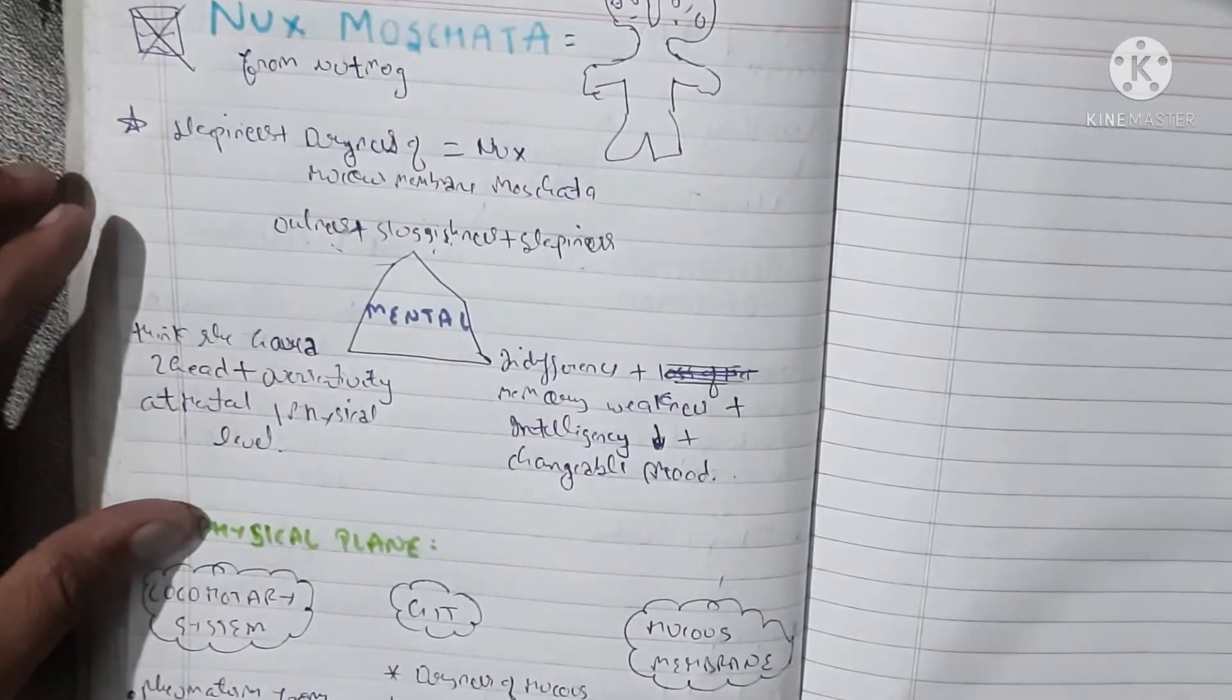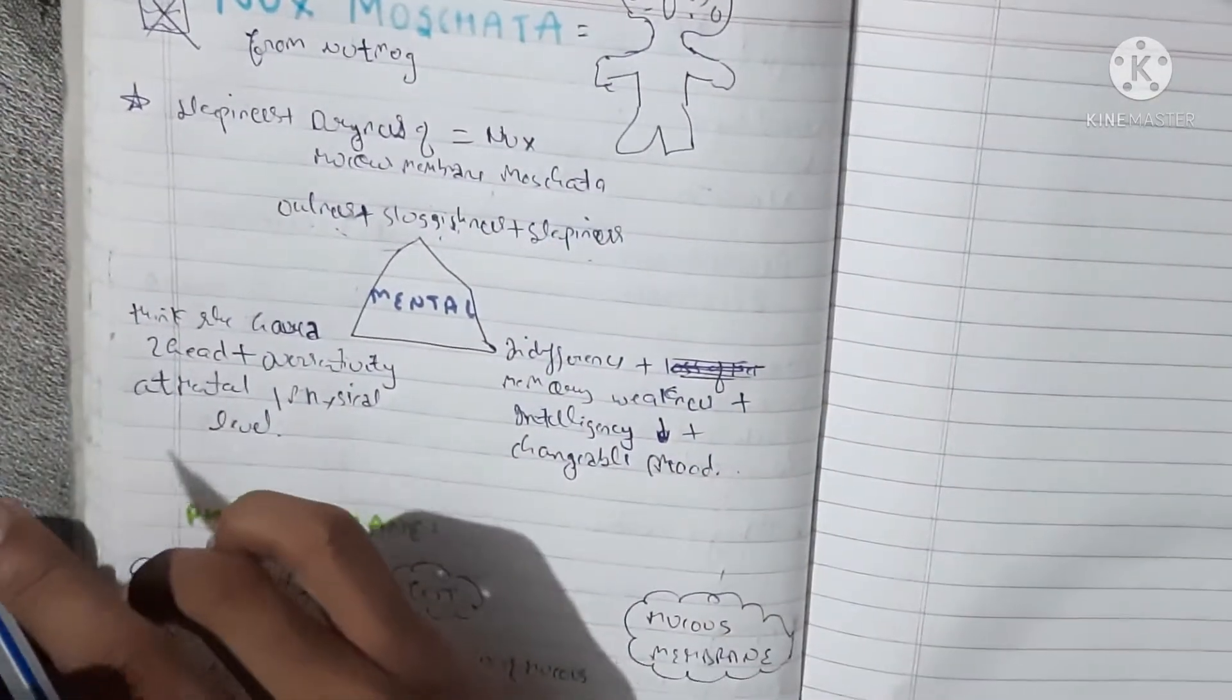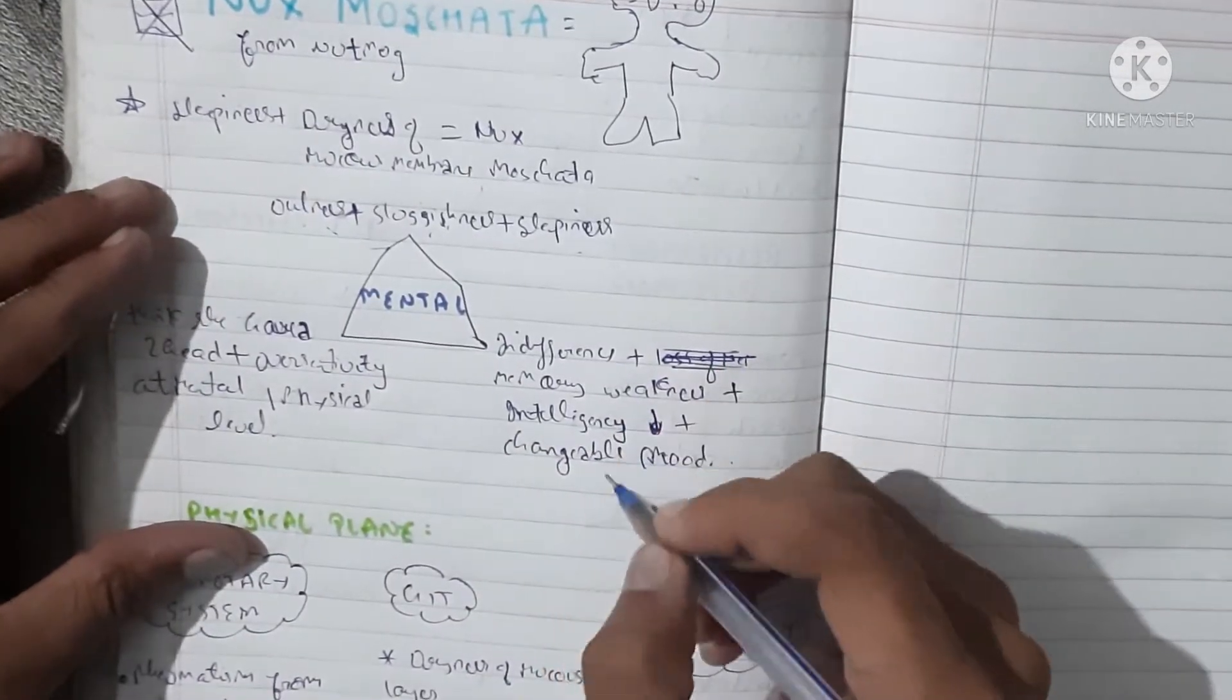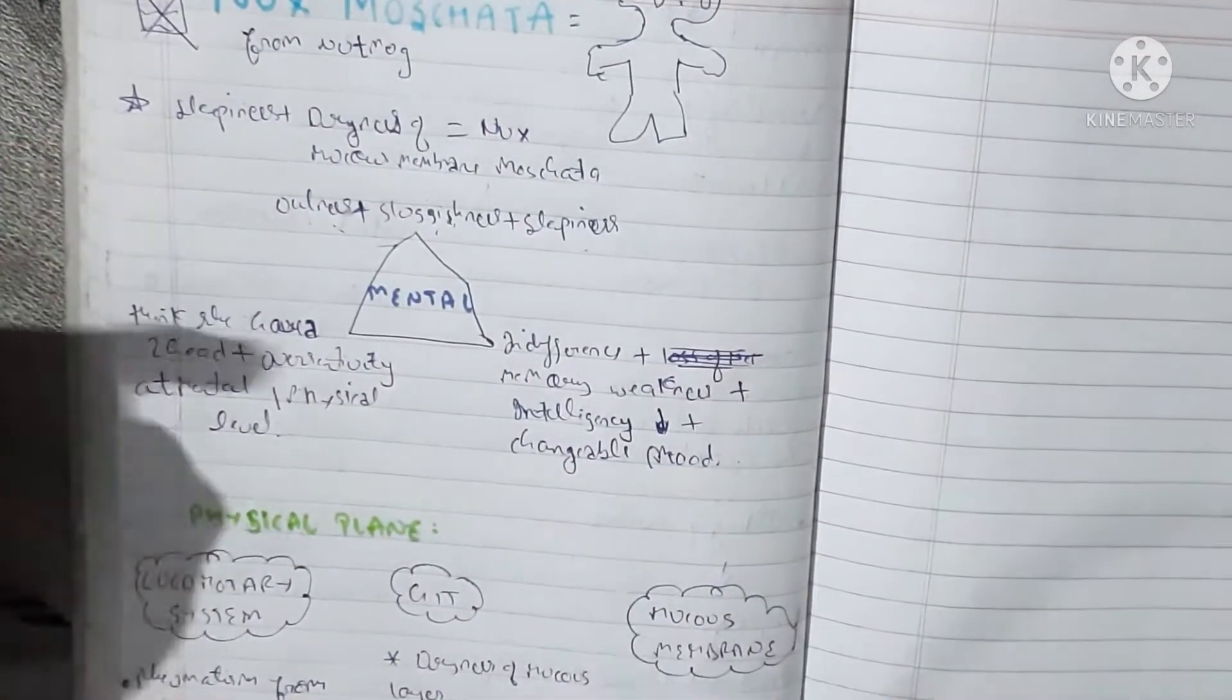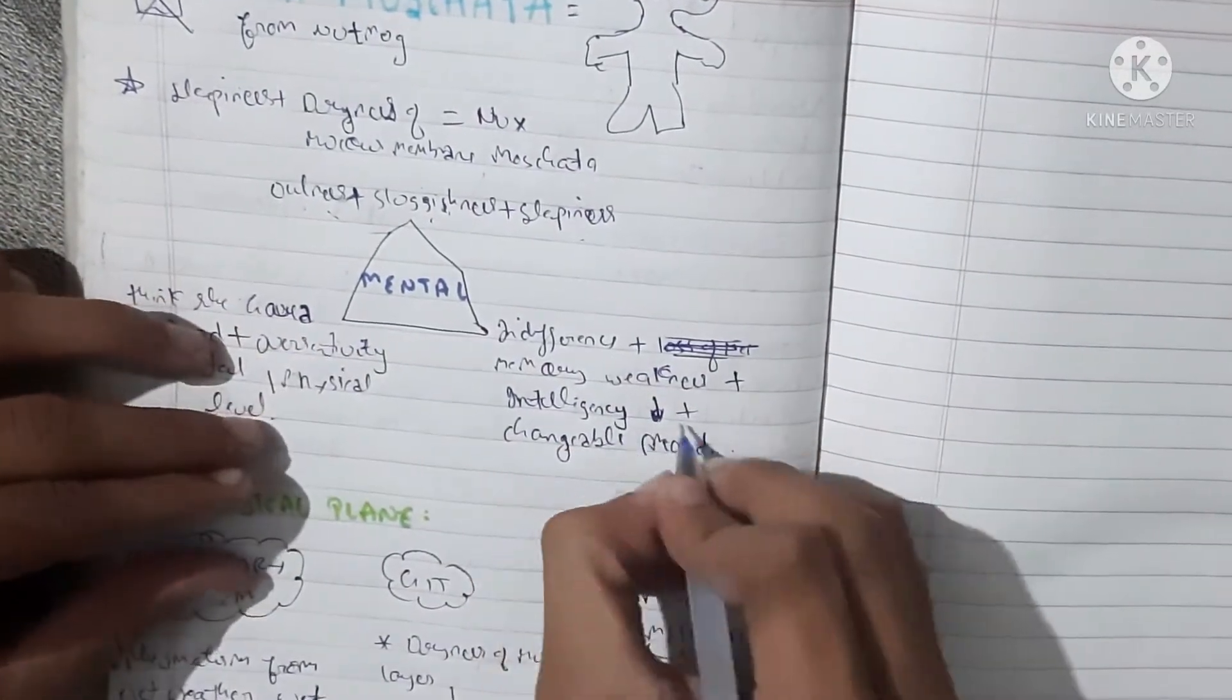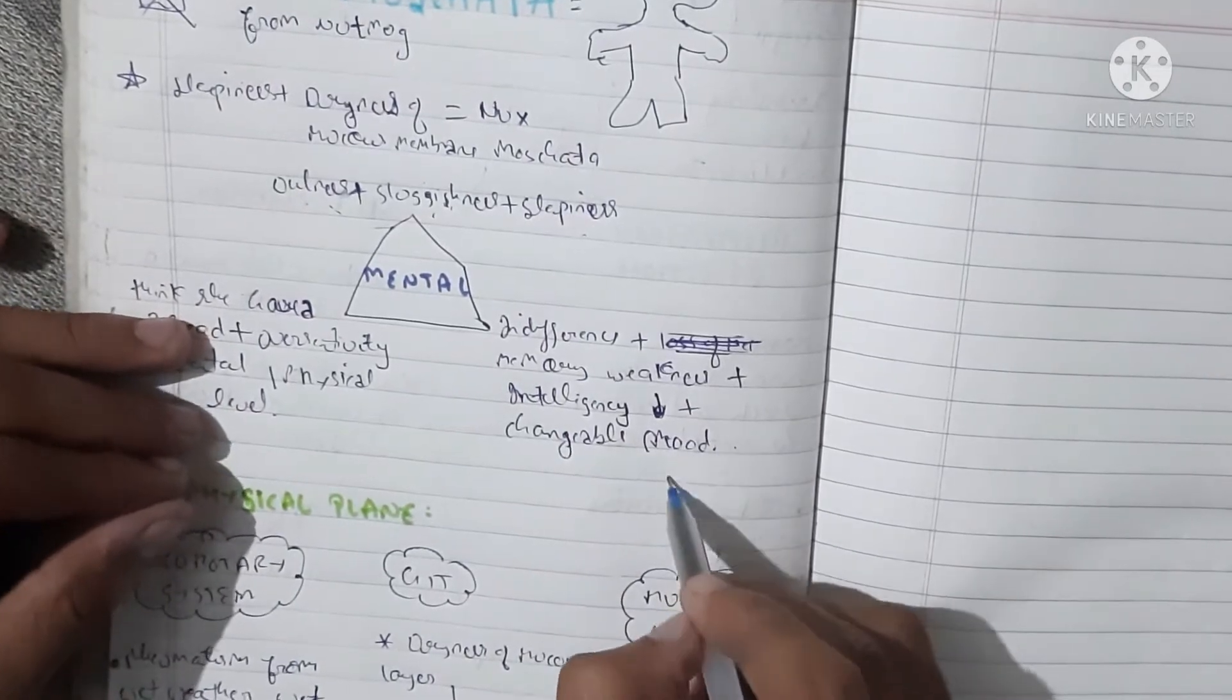What happens is indifference to everything, whether it is work or love or affection. Memory weakness, intelligence decrease, and changeable mood.